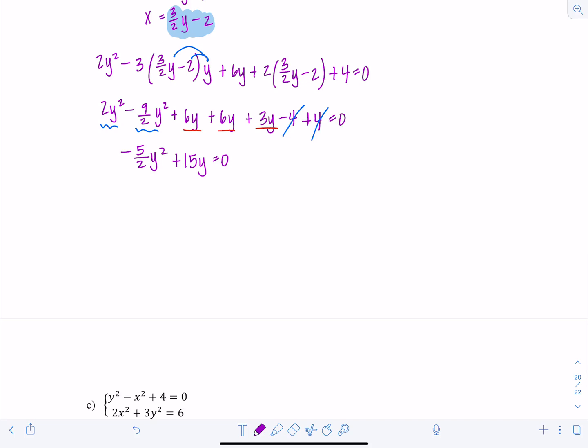There's only two terms though, so I'm just going to factor out a y. And then I have negative 5 halves y plus 15 is 0. So either y is 0 or negative 5 halves y is negative 15, which means y would equal, negative 15 times 2 is 30 divided by 5 is 6. So I get y is either 0 or 6.